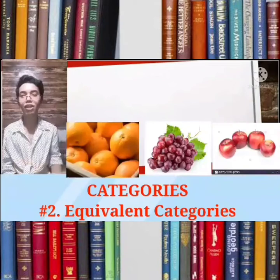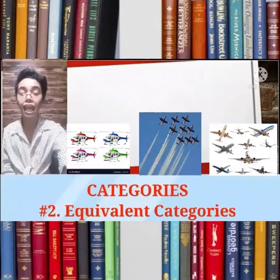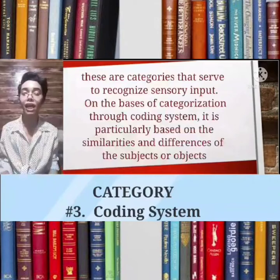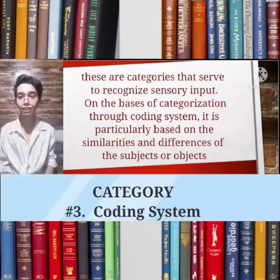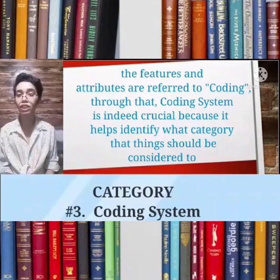Examples of equivalent categories: car, truck, and van are classified as motor vehicles; apples, oranges, and grapes are classified as fruits; shoes, sandals, and slippers are classified as footwear; helicopters, jet planes, and airplanes are known as aircraft. The third category is coding systems — categories that serve to recognize sensory input on the basis of the similarities and differences of subjects or objects. The features and attributes are referred to through the coding system, which helps identify what category a thing should be considered to belong to.